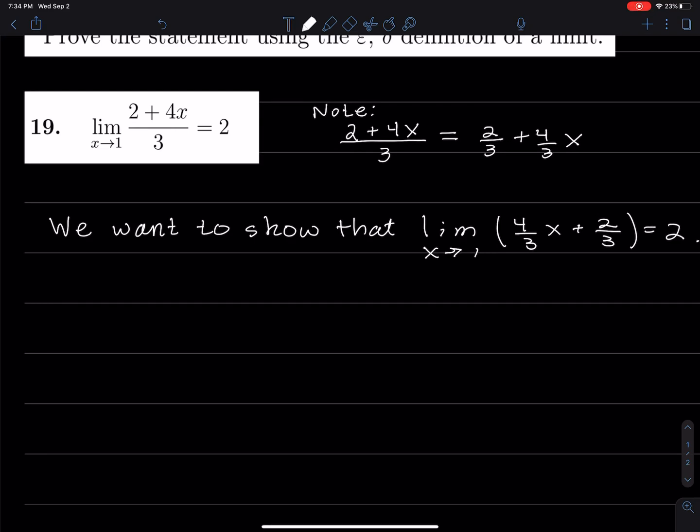Now, we can use the limit laws because this is a rational function, or actually it's a linear function, so it's a polynomial. You can directly substitute x equals 1, and when you do that, we see that y equals 2. That's because this is a polynomial, and polynomials are continuous.